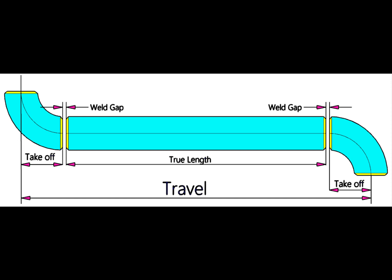So how we will calculate the true length of the spool? The true length or cut length is: add 2 welding gap and 2 take off, then minus this sum from the travel.